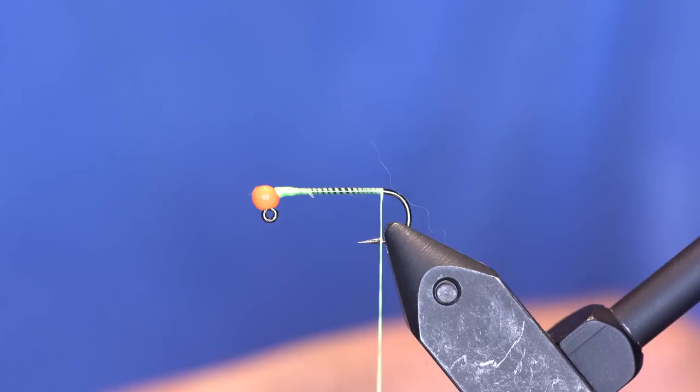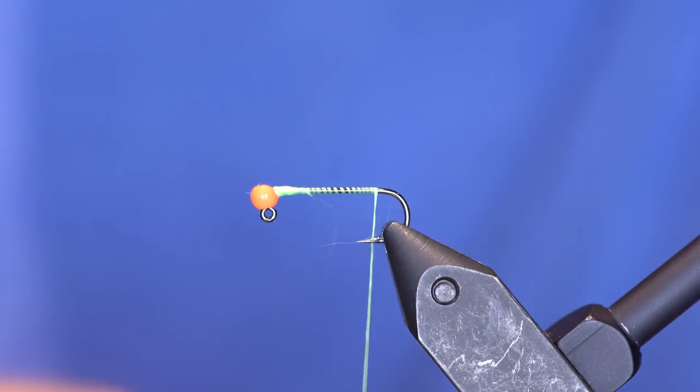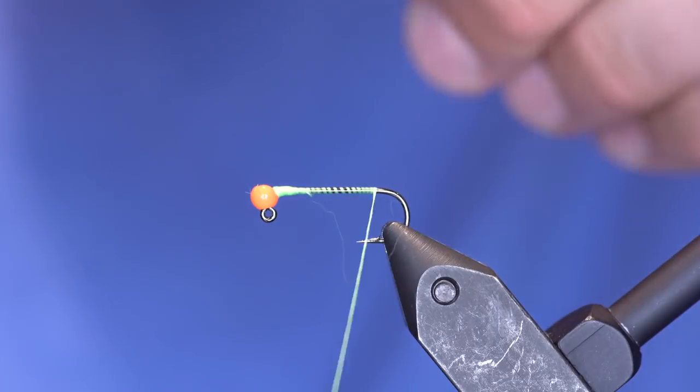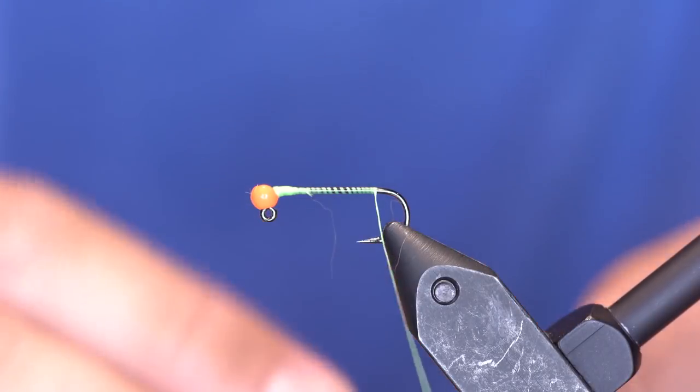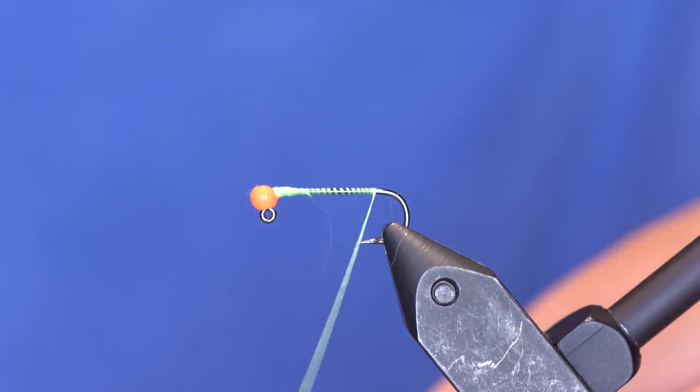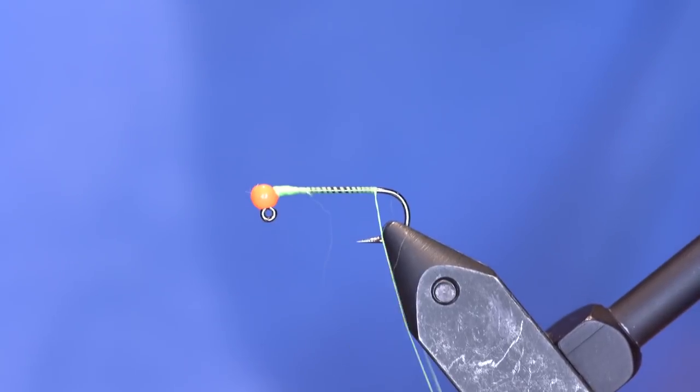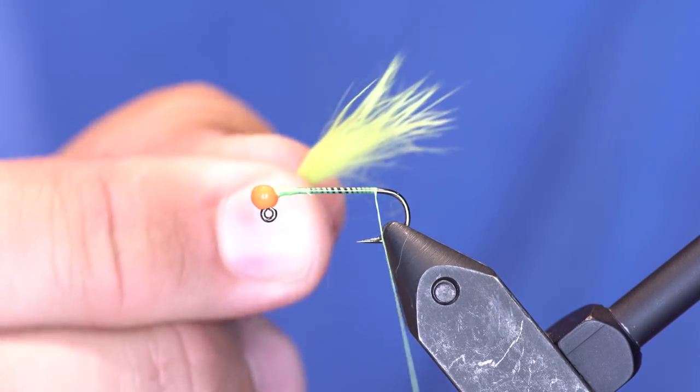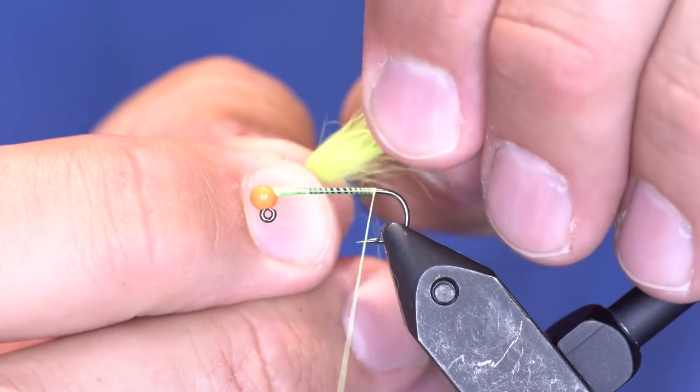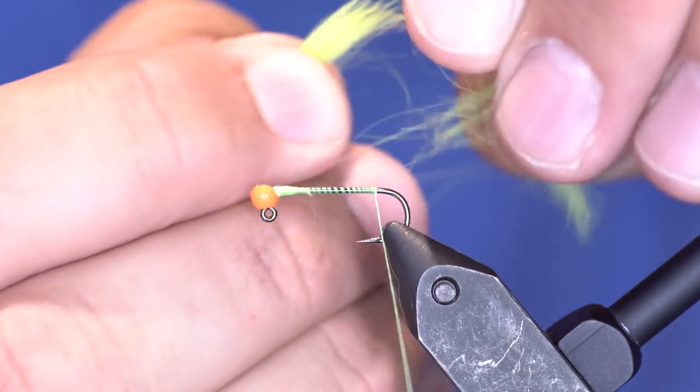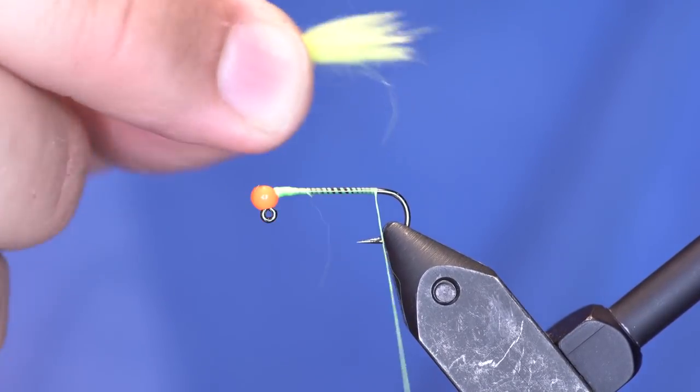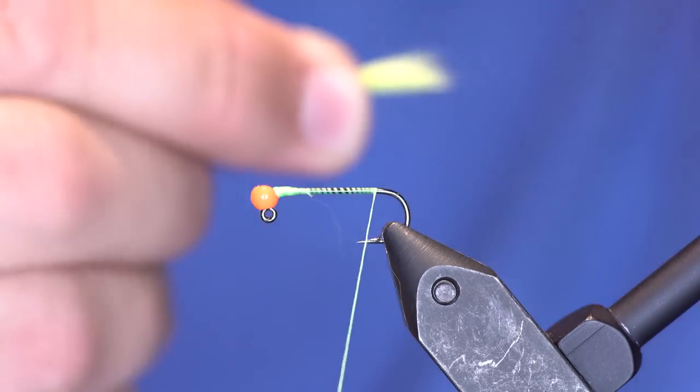So I'm going to take a rabbit strip like this. I'm just going to bunch up the hair and cut off a clump of it. And from here, I'm going to pull out these guard hairs or most of them to expose the softer underfur, and that's what I'm going to use as my tail.